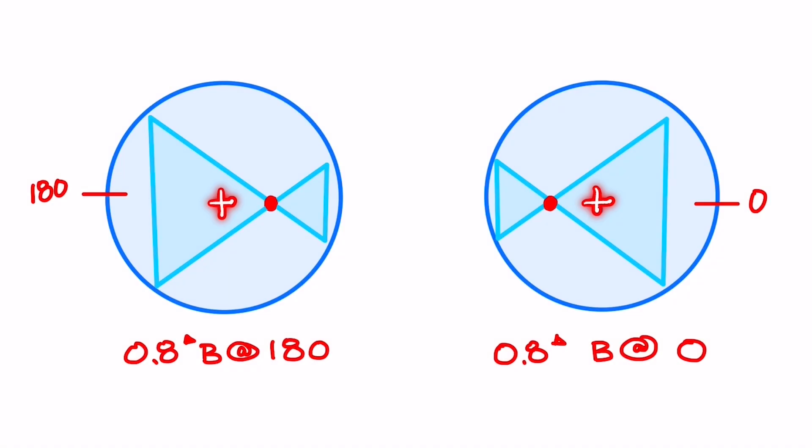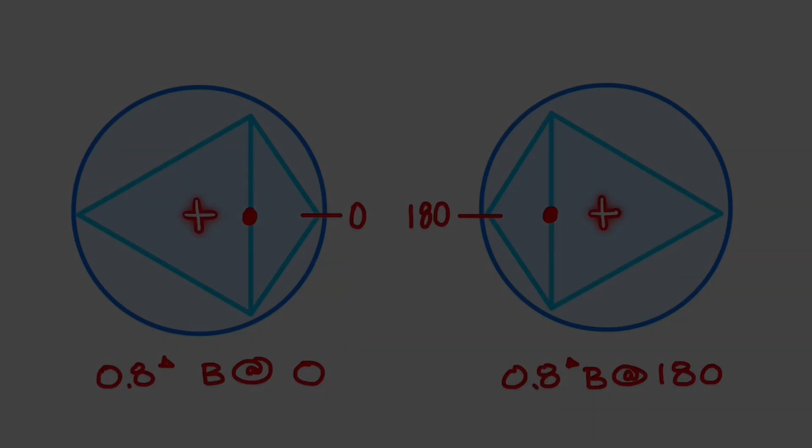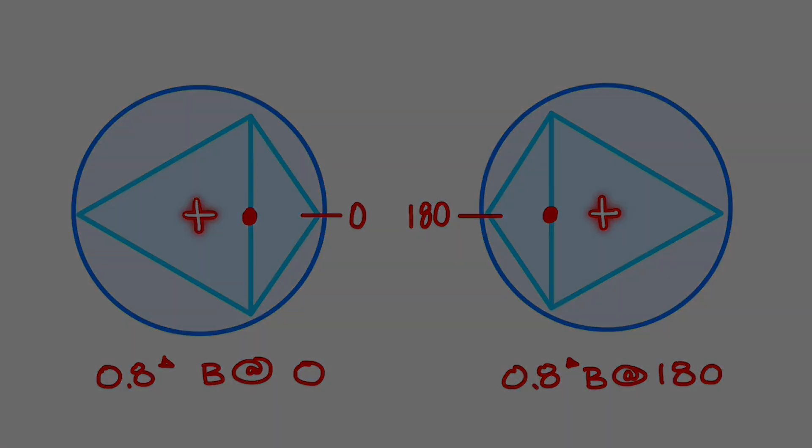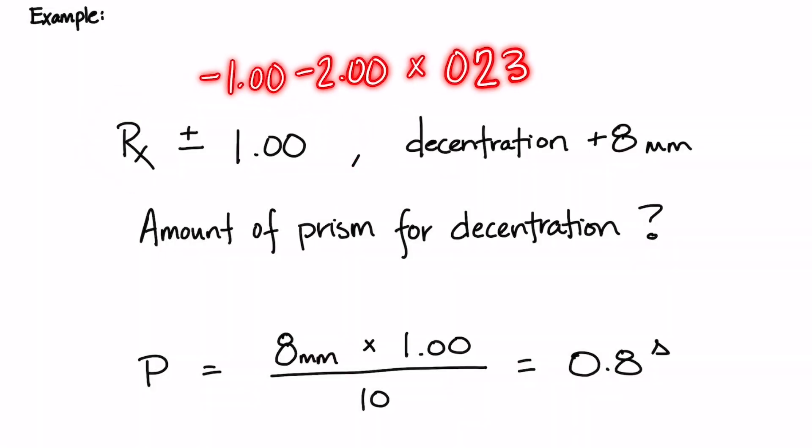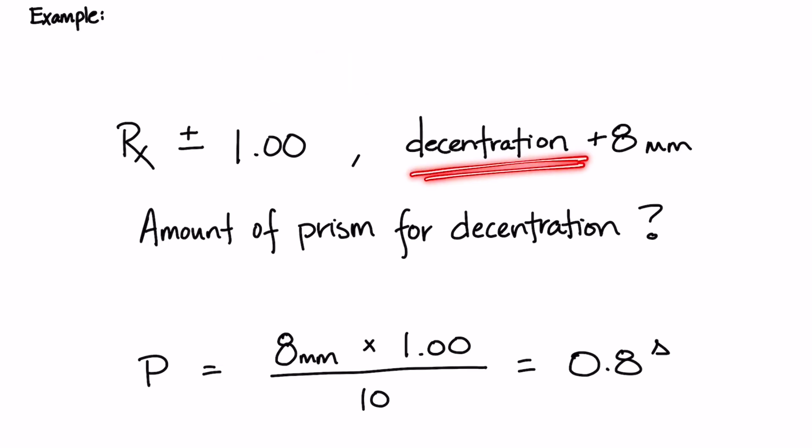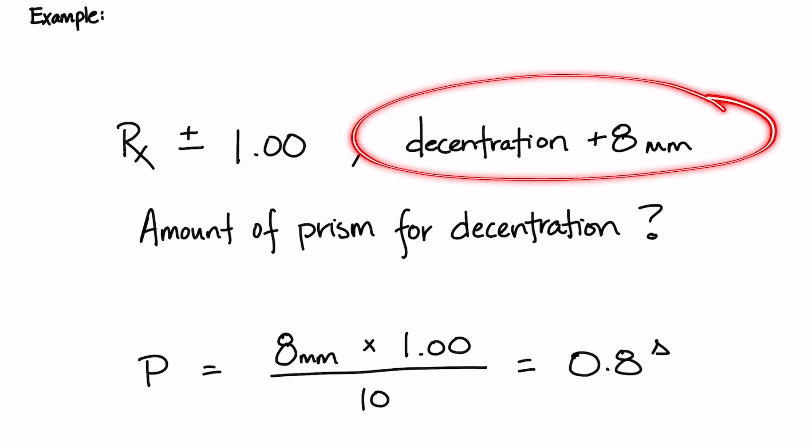And so that's it. That's how you calculate prism and determine base direction for prism for decentration. Two things I want to point out. If the lens has cylinder power, you have to find the prism in the decentration meridian. For horizontal decentration like we're doing in this example, we would want to find the power in the 180 meridian.